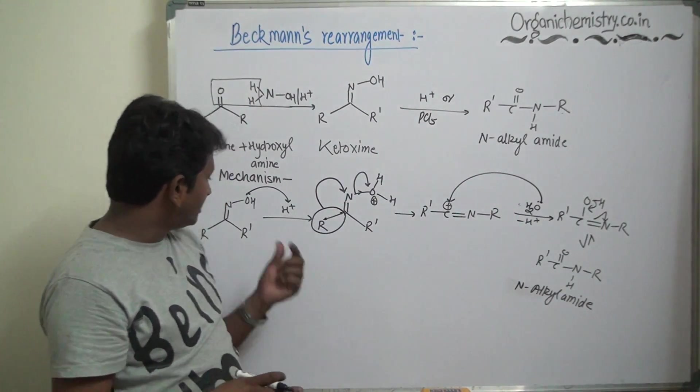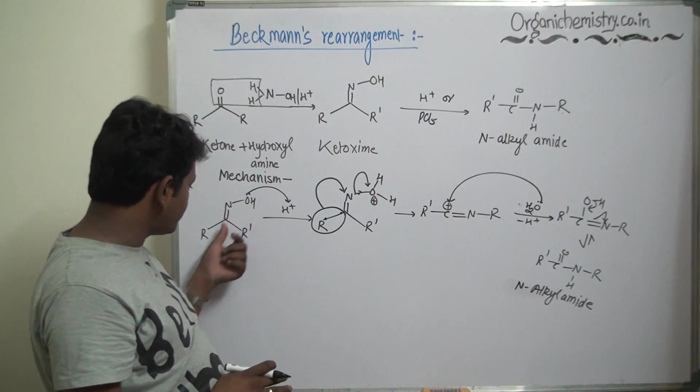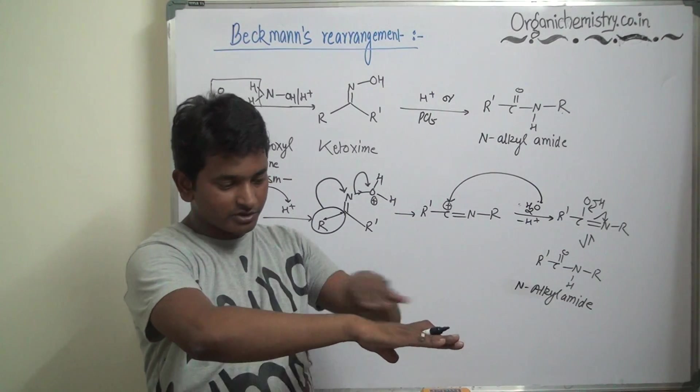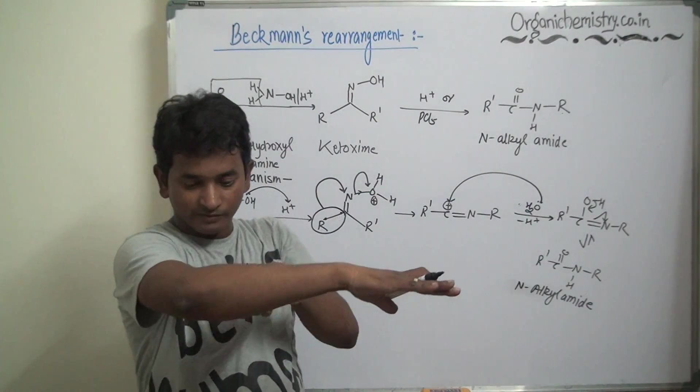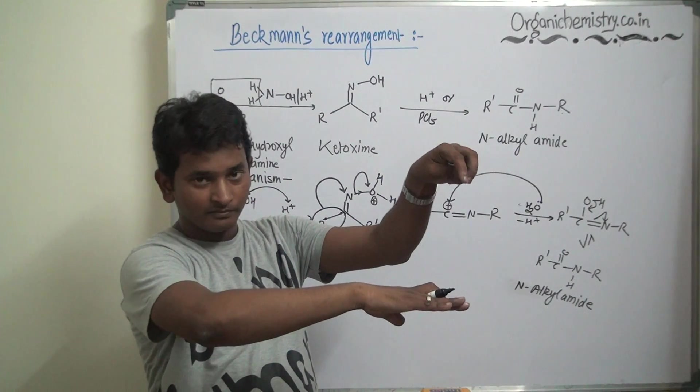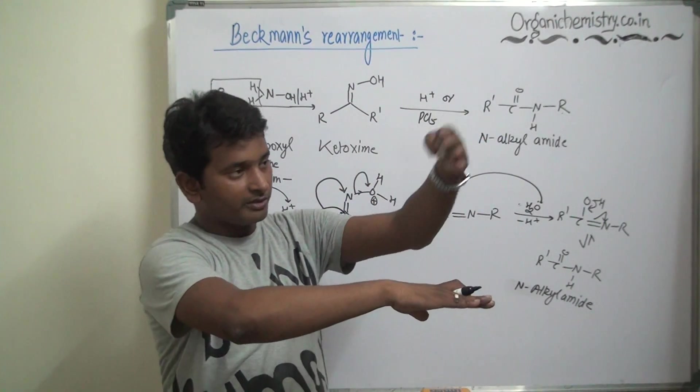If we carefully analyze, the leaving group OH and R are just trans to each other. That is, if we consider this carbon-nitrogen as a double bond, here R' and this one is R, and this nitrogen is attached with the OH. A proton attacks over this OH and water removes.